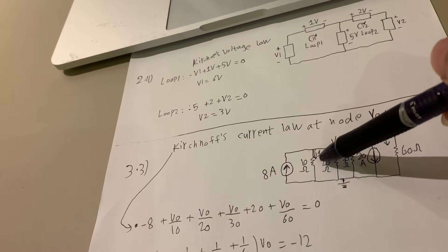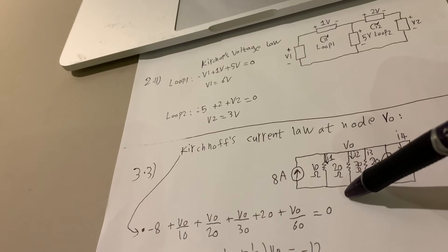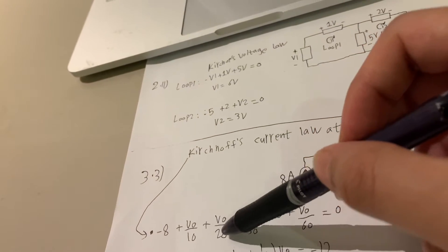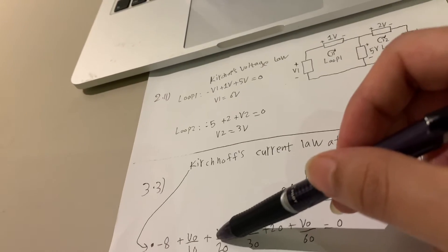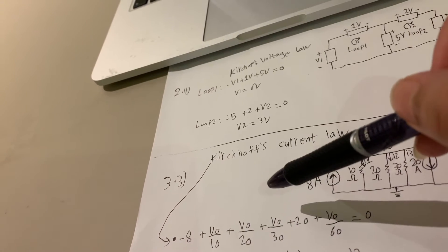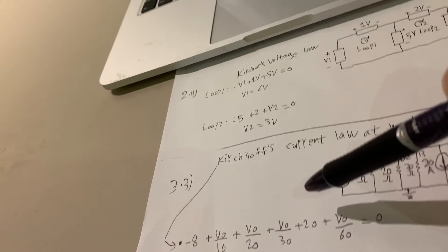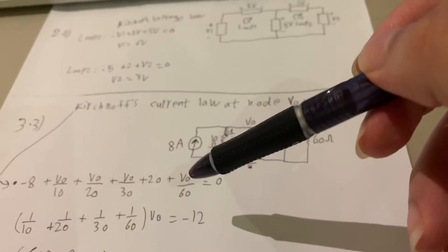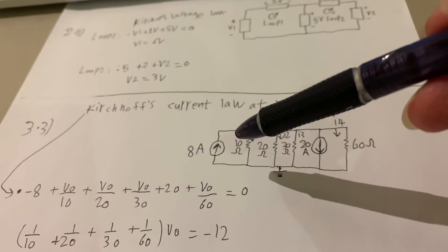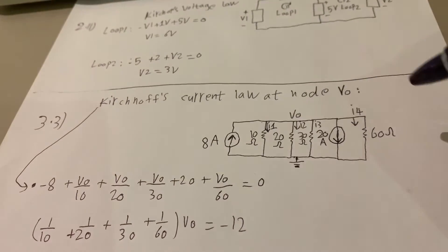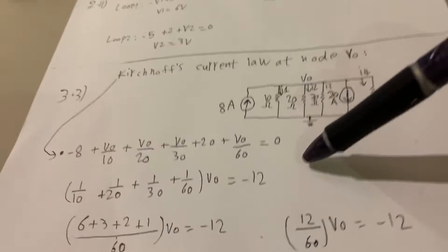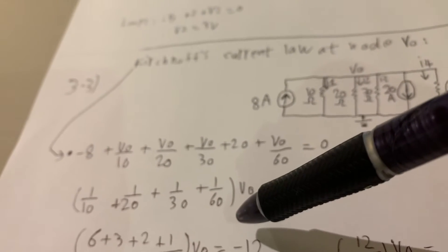We have the difference between the two node voltages; the second node is voltage zero, so we have only the voltage of the first node. For this current we have V0 over 10, then V0 over 20, then V0 over 30, then V0 over 60.